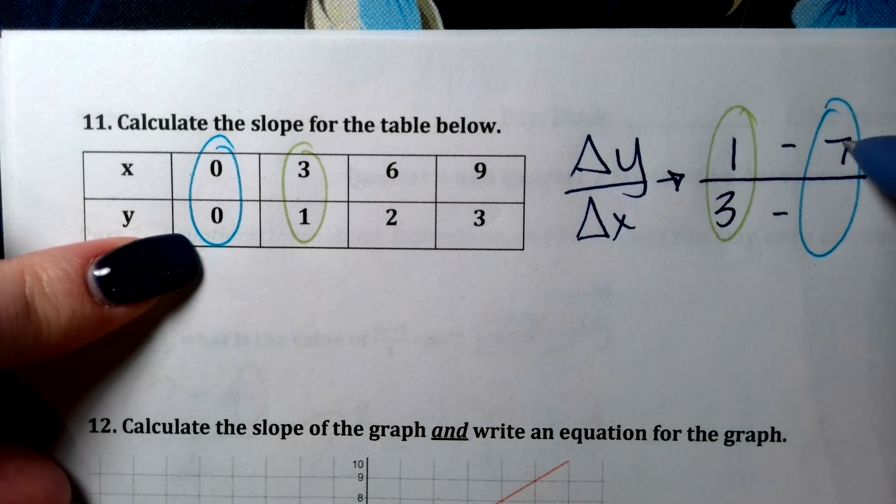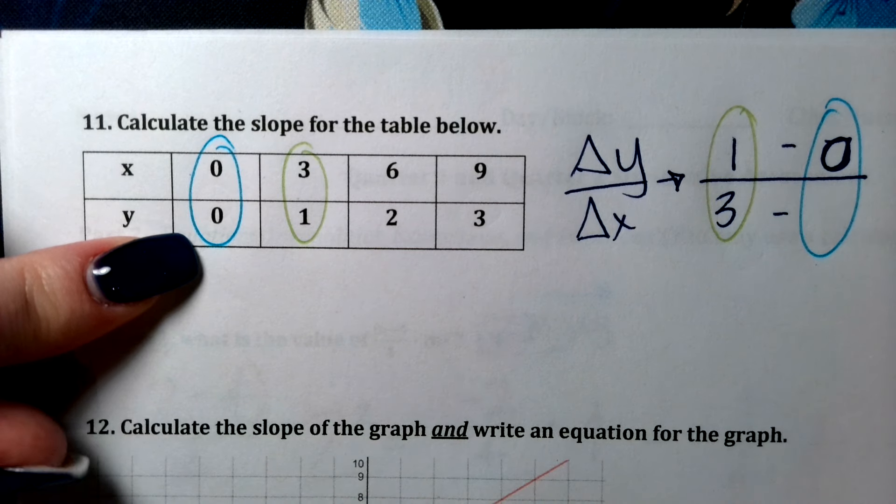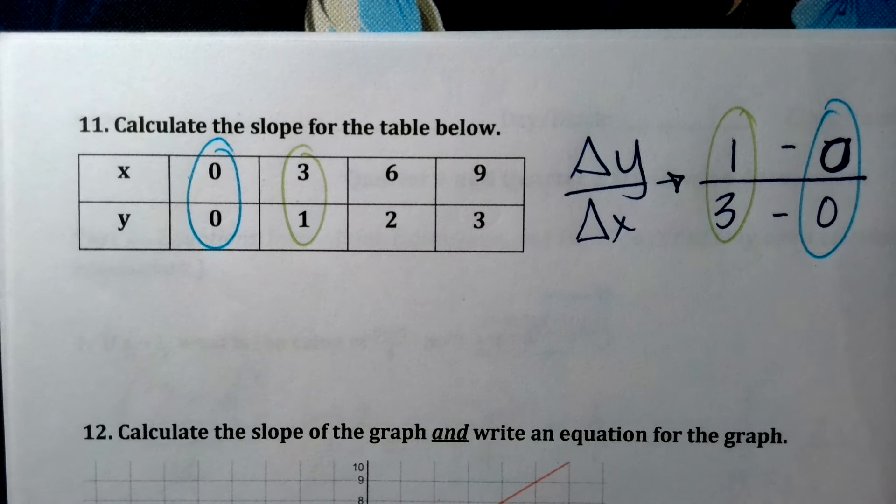Why did I write 7? That's supposed to be a 0. Oh my goodness, I'm losing it.